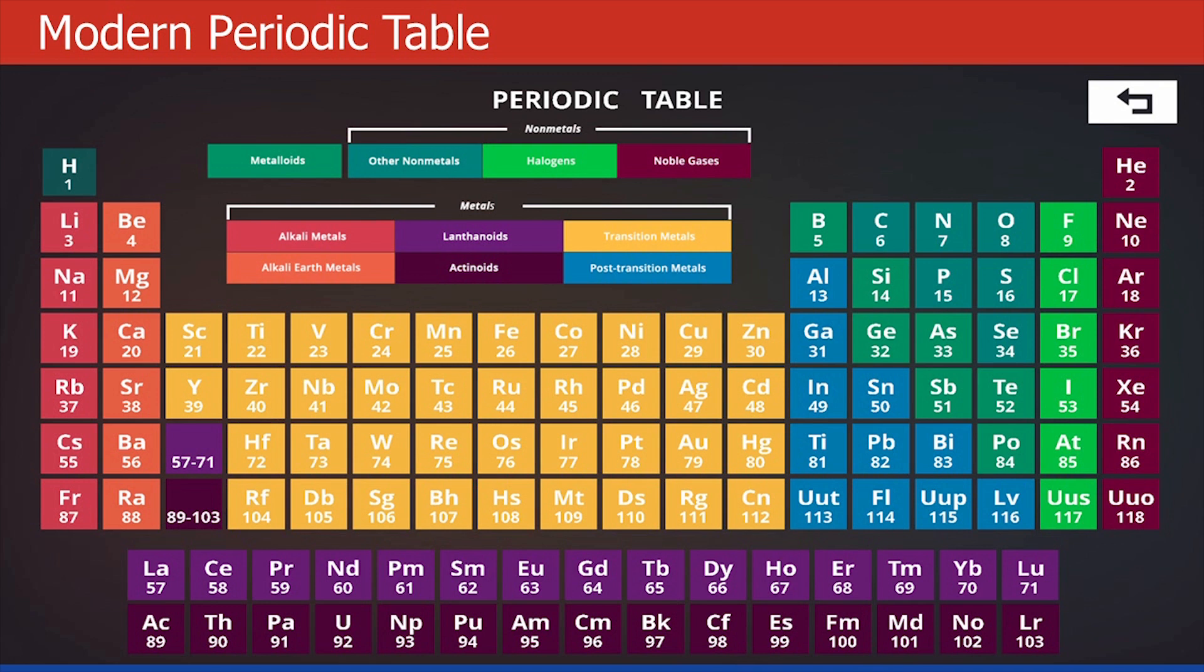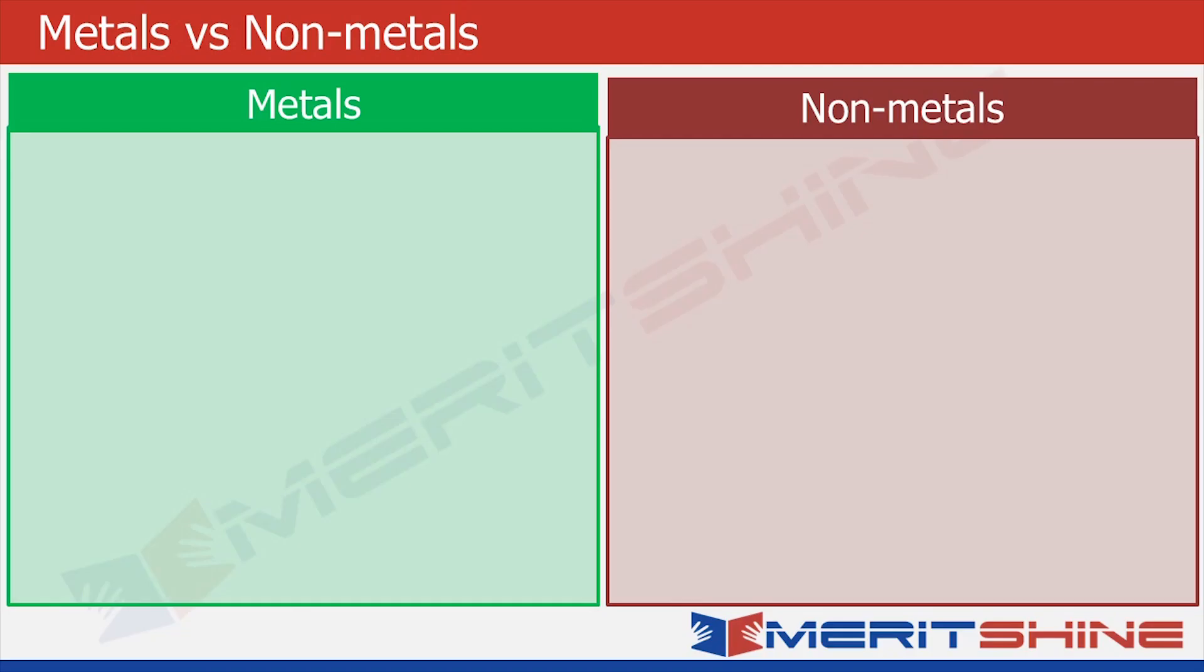Now that we have located the metals and non-metals, it is a good time to see how they are different from each other. Metals generally have luster, that is, shine. All metals are generally solid except mercury, which is a liquid. They are good conductors of heat and electricity. Silver is the best, while copper stands second.